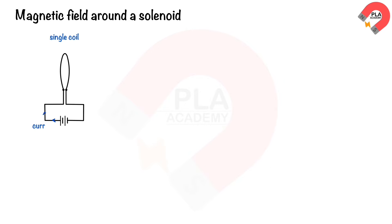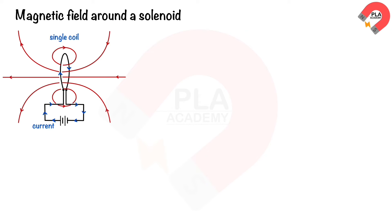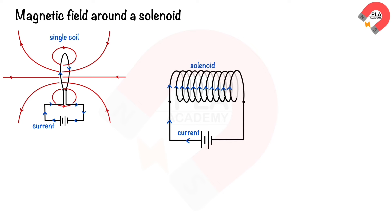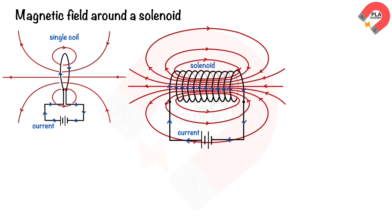Magnetic field around a solenoid: when a current flows through a wire looped into a coil, the magnetic field lines circle around each part of the coil, passing through its center. When the wire is coiled to form a solenoid, the magnetic field strength increases. The stronger the magnetic field, the greater the number of field lines.